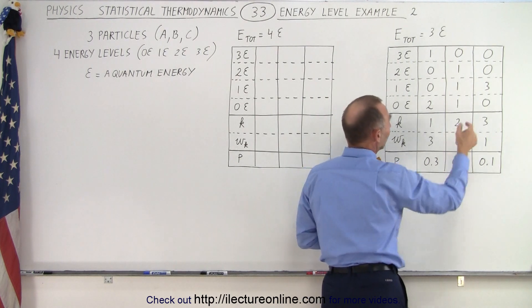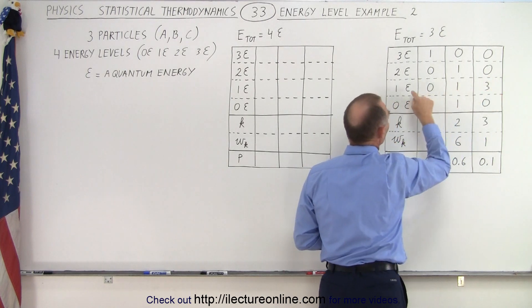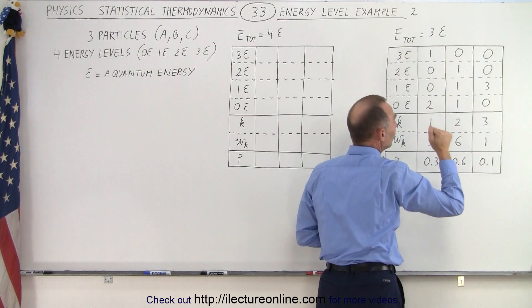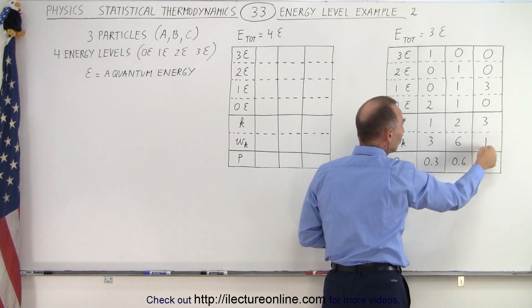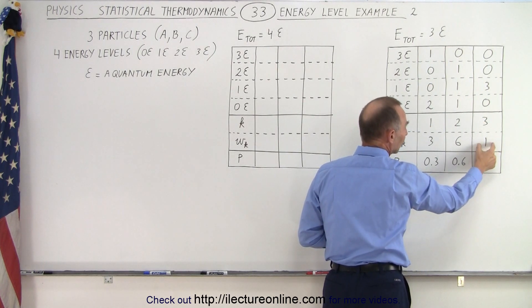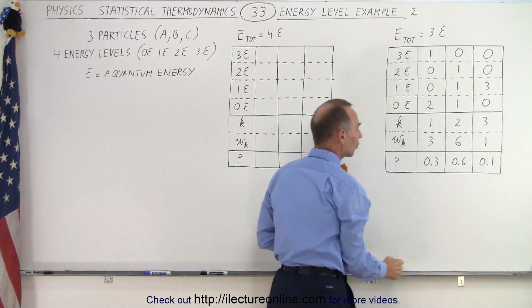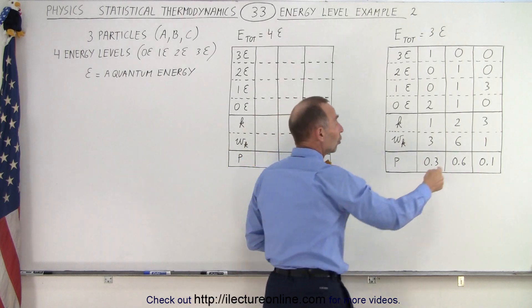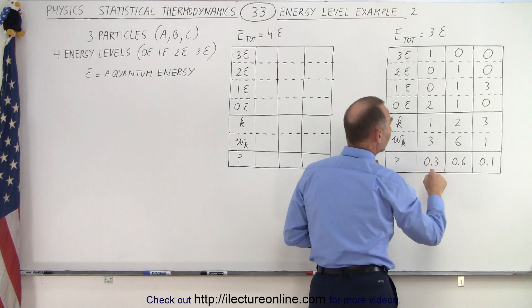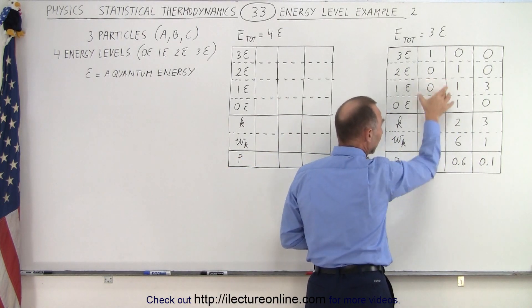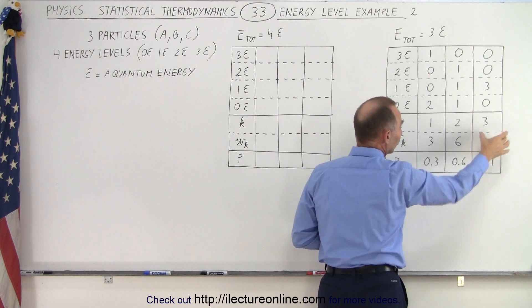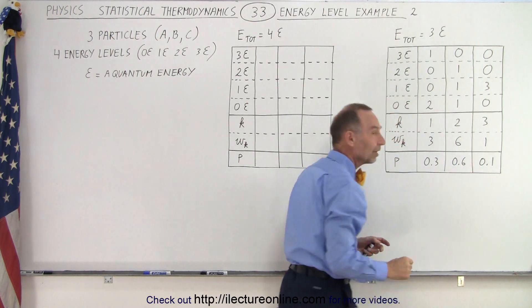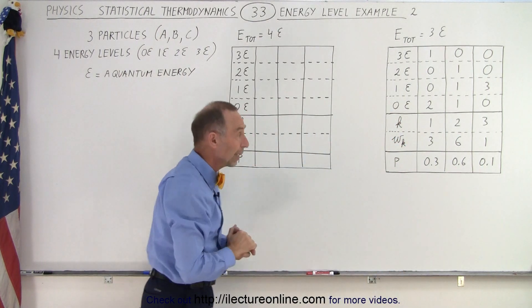The final arrangement was that we had all three particles in the level where there was one quantum energy available for each particle, totaling to three quantum energies, and therefore there was only one way in which this could be arranged — one microstate in the third macrostate. Then we can calculate the normalized probability. There's a total of ten microstates: three in the first column, six in the second column, one in the third column, giving us normalized probabilities of 30%, 60%, and 10%.